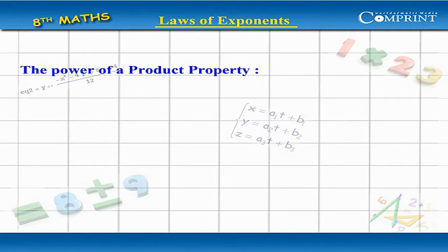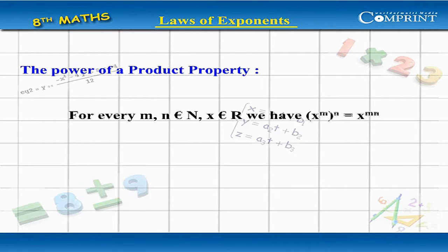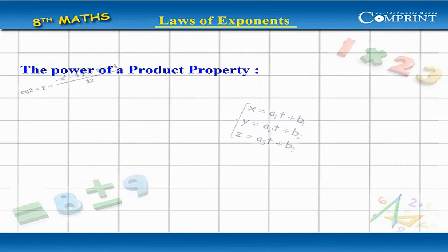The Power of a Power Property: for any m, n belonging to capital N and x belonging to R, we have x to the power of m, whole to the power of n, equal to x to the power mn.